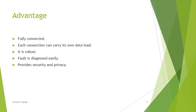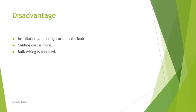Advantages of mesh topology: it is fully connected, each connection carries its own data load, it is a robust network, faults can be easily diagnosed, and it provides high security and privacy. Disadvantages: installation and configuration are difficult, and the cost of cabling is high since bulk wiring is required.